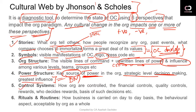Fifth is Control Systems — what kinds of controls exist in the organization. There are financial controls, quality controls to maintain the quality of the organization's work. There can be rewards — who decides these rewards and what is the basis on which such rewards are decided. This control system also impacts the state of organizational culture of any organization.